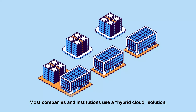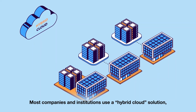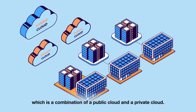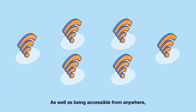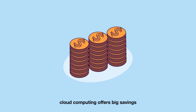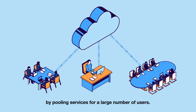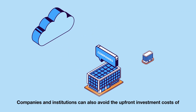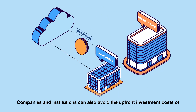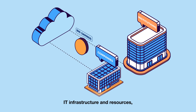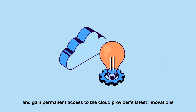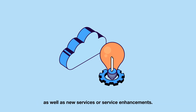Most companies and institutions use a hybrid cloud solution, which is a combination of a public cloud and a private cloud. As well as being accessible from anywhere, cloud computing offers big savings by pooling services for a large number of users. Companies and institutions can also avoid the upfront investment costs of IT infrastructure and resources, and gain permanent access to the cloud provider's latest innovations, as well as new services or service enhancements.